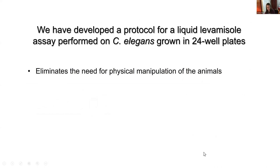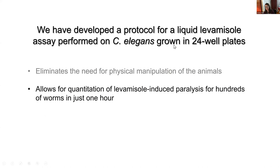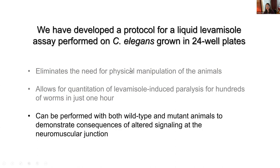Hypersensitivity or resistance to levamisole has traditionally been assayed by transferring animals to agar plates containing levamisole and then regularly prodding the worms to determine the time point at which paralysis occurs. We developed a liquid levamisole assay that can be performed on worms grown in 24-well plates. This liquid assay eliminates the need for physical manipulation of the animals, which is great for people who've never worked with worms before. The vigorous swimming of the animals in liquid also allows quantitation of levamisole-induced paralysis for hundreds of worms in just one hour.